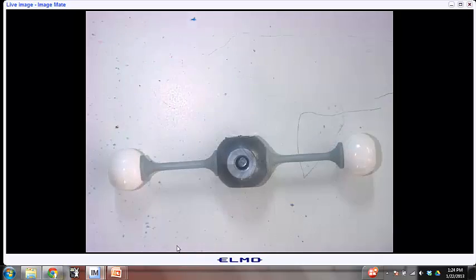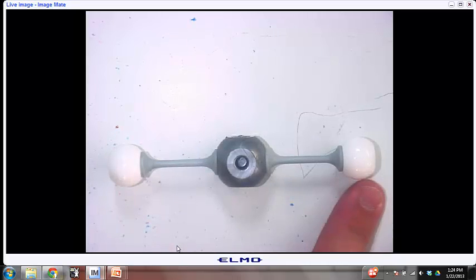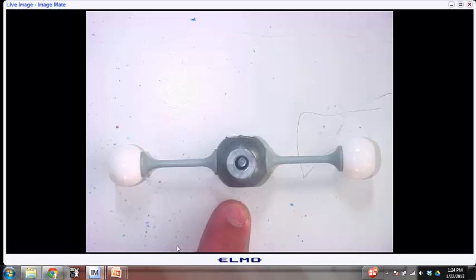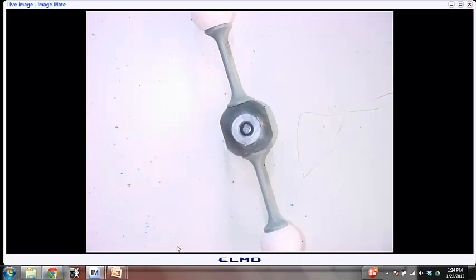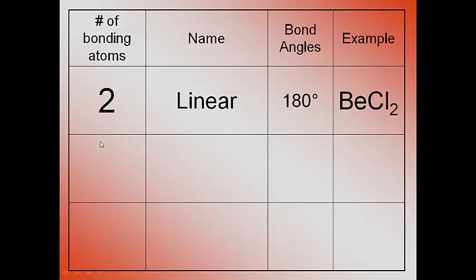So instead, let's put in something like this. This would be an example of BeCl2. Notice that you have one central atom and two bonding atoms. One here and one here. And here's your 180 degrees. So your molecule, your angle goes from this bond all the way around to that bond over there. And that's where your 180 degrees comes from. So this guy would be your Cl, this guy would be your Cl, and this guy in the middle would be your Be. And notice that no matter which way I turn it, it's always going to be 180 degrees.